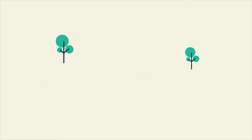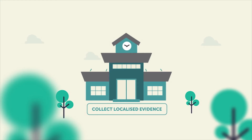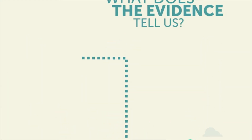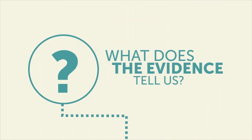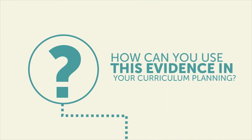The first step is to collect localised evidence. By doing this, you can identify the priorities for your students and your community, as well as valid and reliable sources of evidence. Think about what tools and evidence you can access in your school or community, and how often you will collect and review this evidence. How can you use this evidence in your curriculum planning?